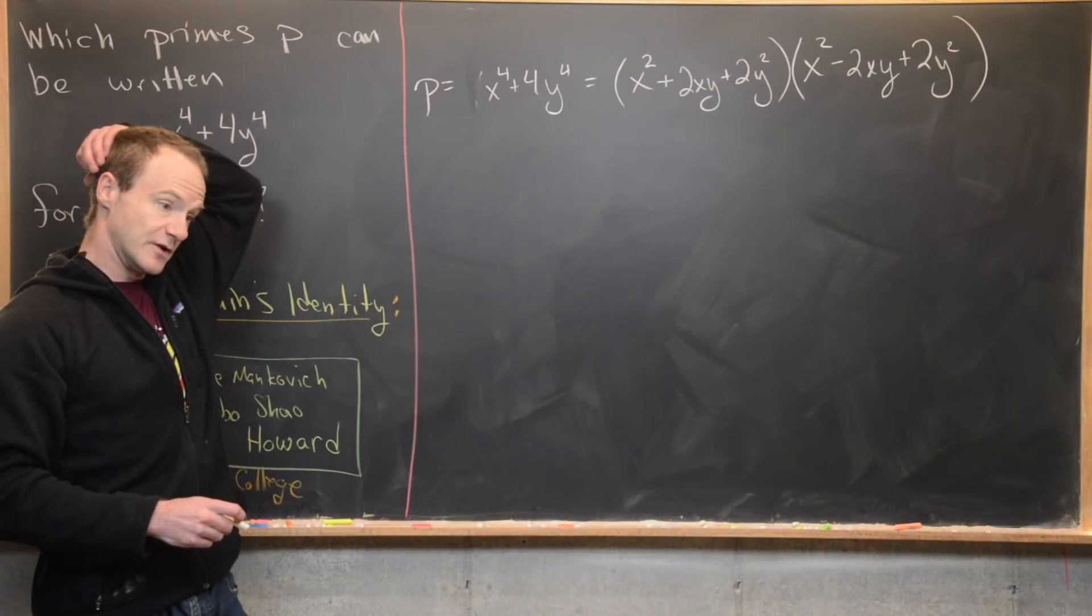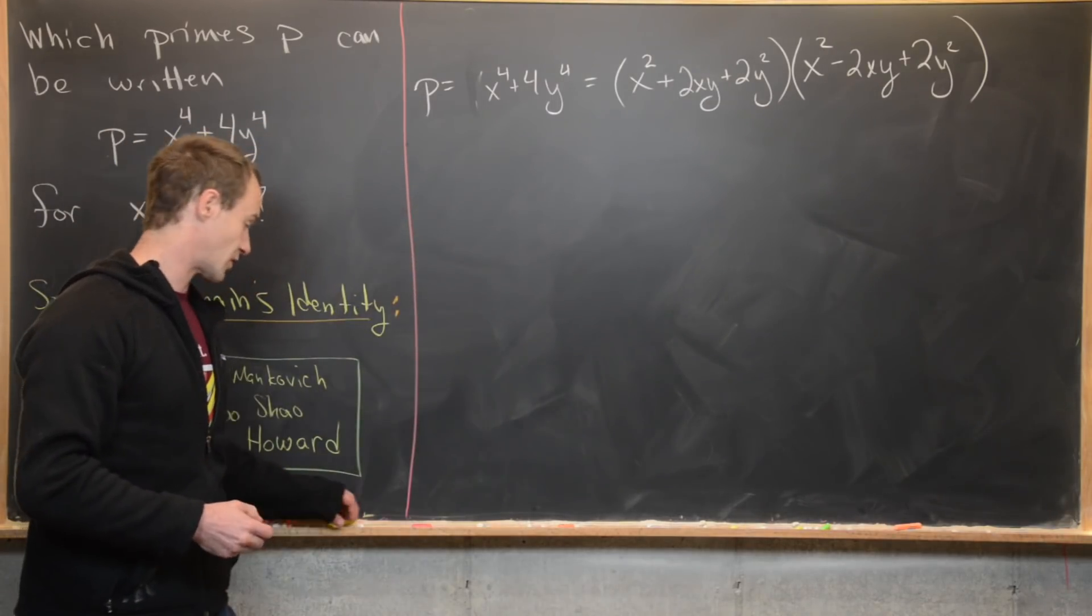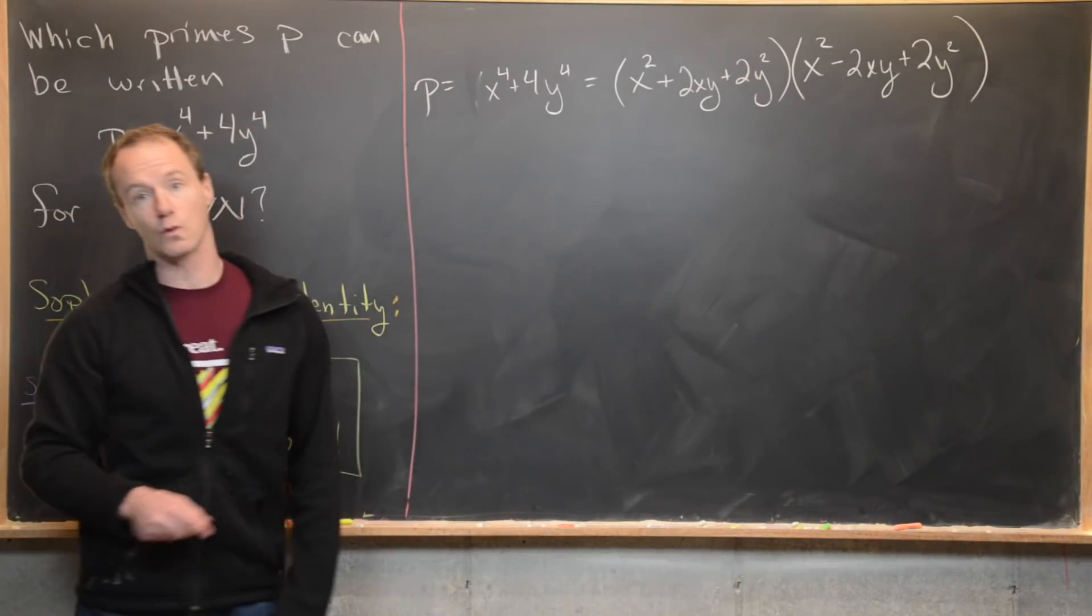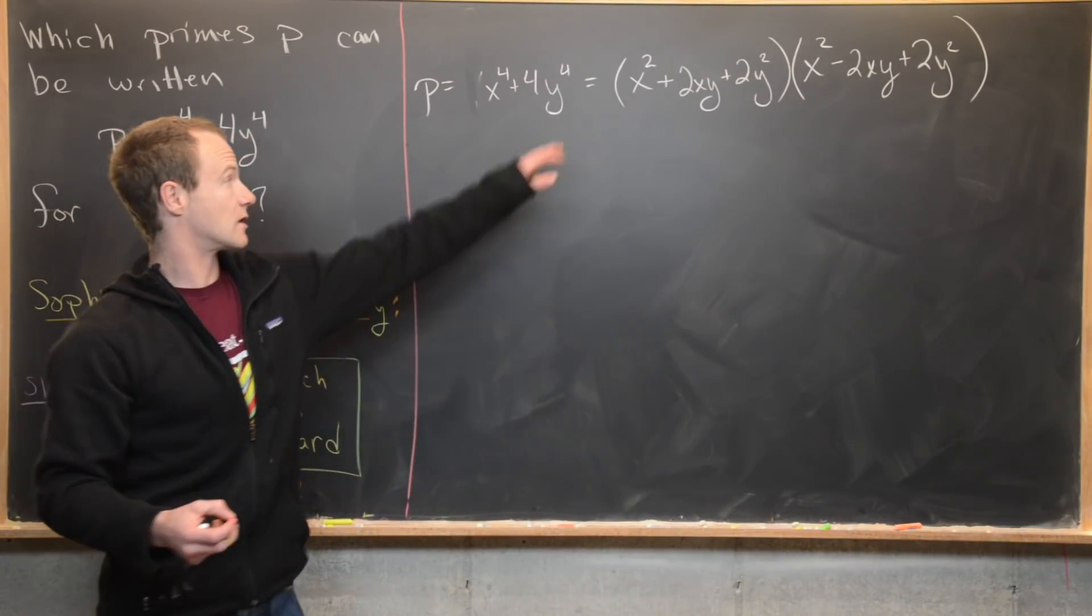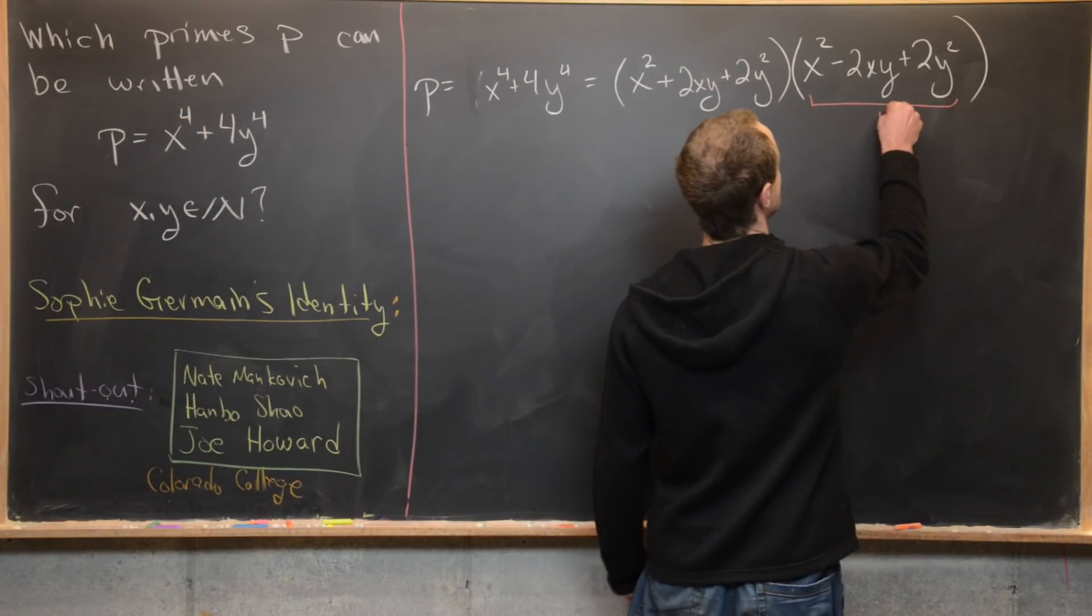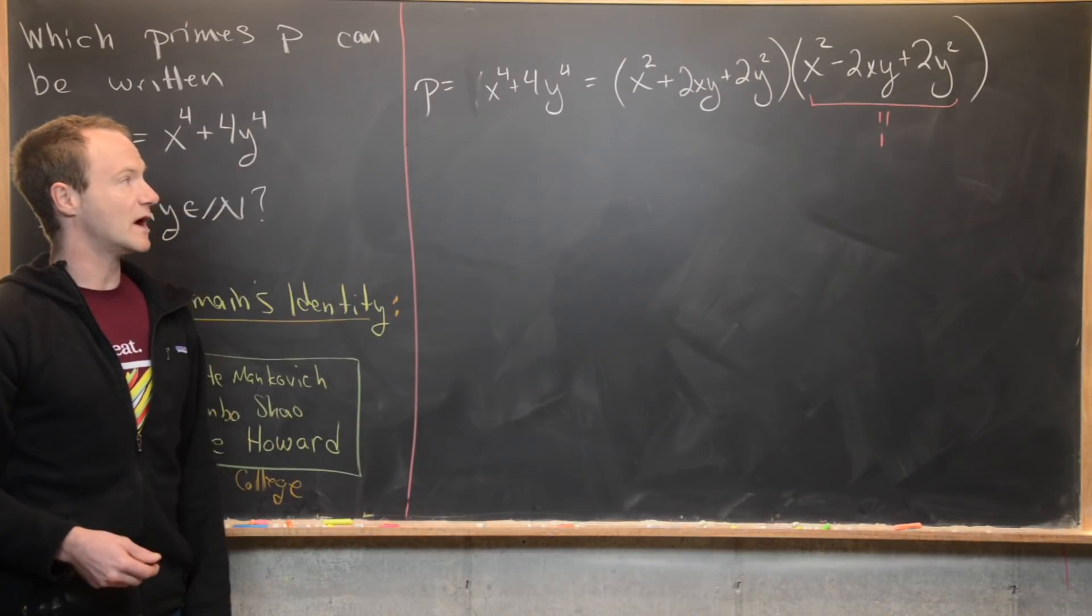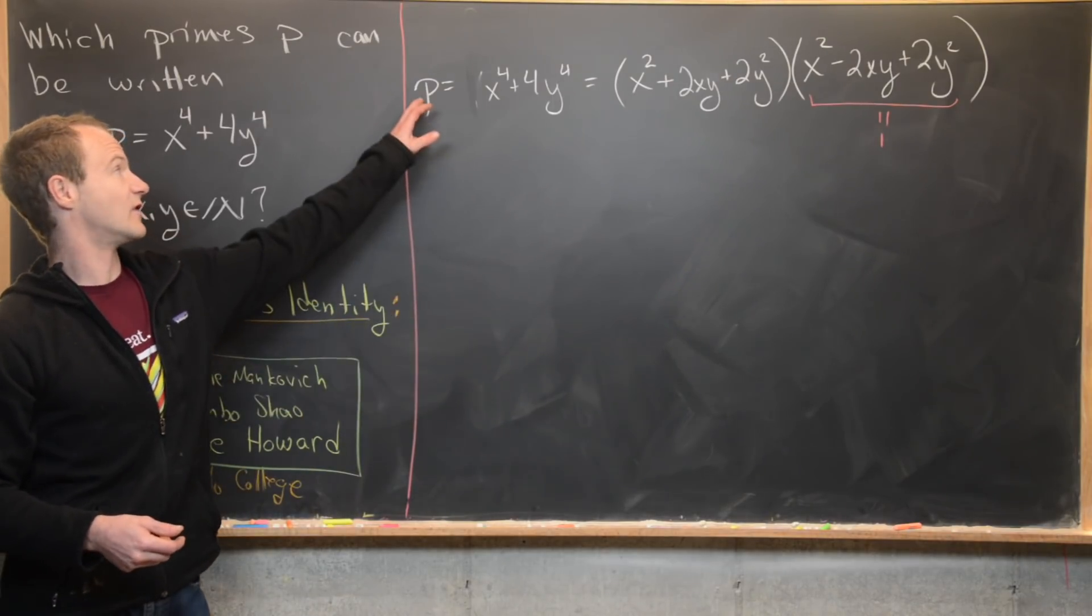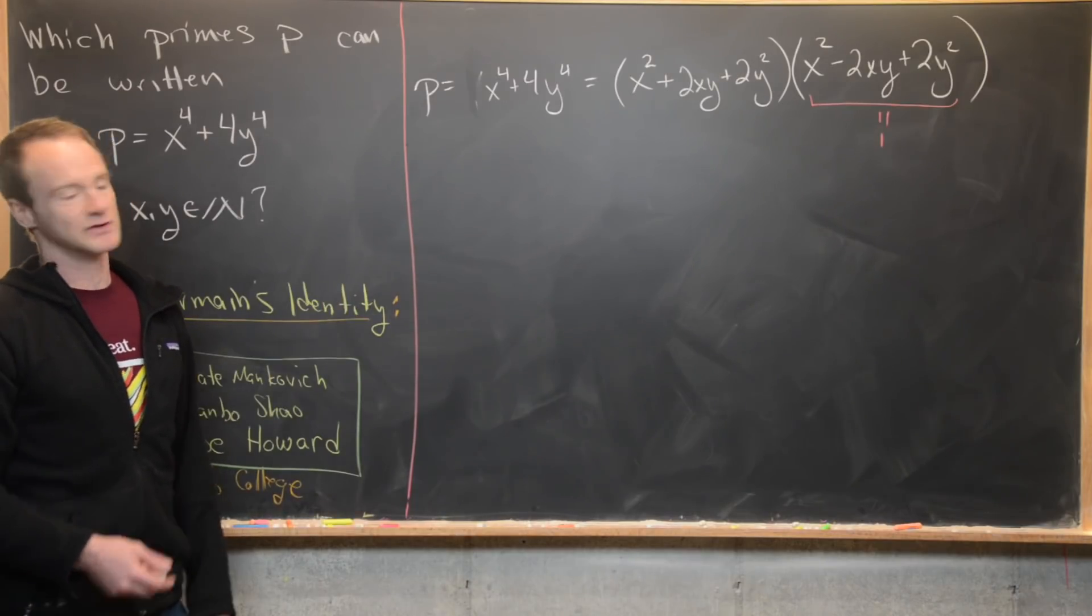Next, what we want to notice is that since P is a prime and we have a factorization for this prime, that means one of these things has to be the number one. But since this second one is smaller than this first one, that means this second one must be equal to one. So that gives us some sort of equation that we can solve that is a lower degree, and it doesn't involve this unknown prime P, it's just got two variables x and y.